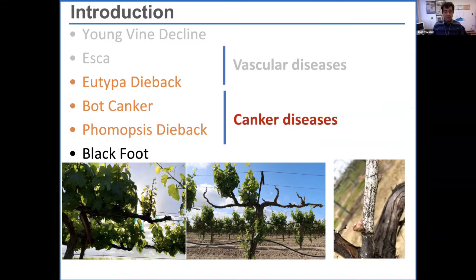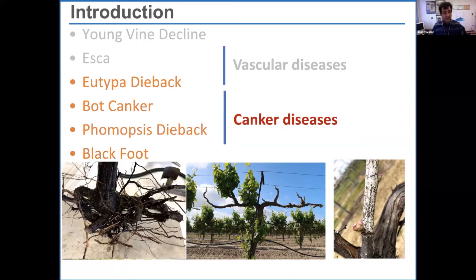Phomopsis is another problem — it used to be known as just causing shoot dieback, but now we know it can also be involved with canker diseases. Black foot is another story: it is a group of soil-borne pathogens that colonize within the root tissues and contribute to grapevine trunk diseases not only in California but in grape-growing areas worldwide.